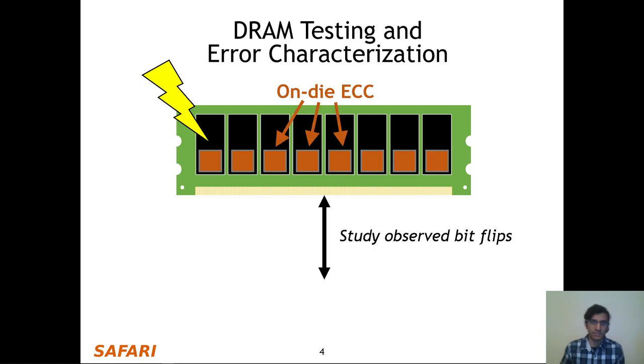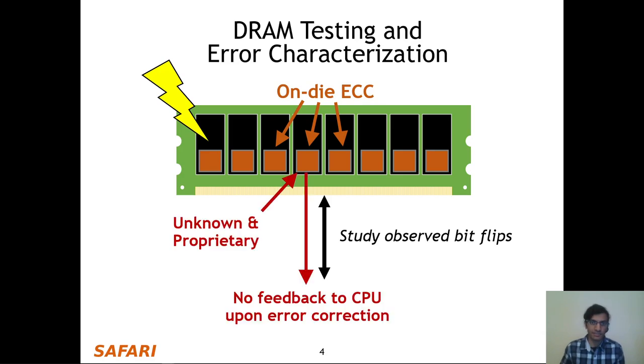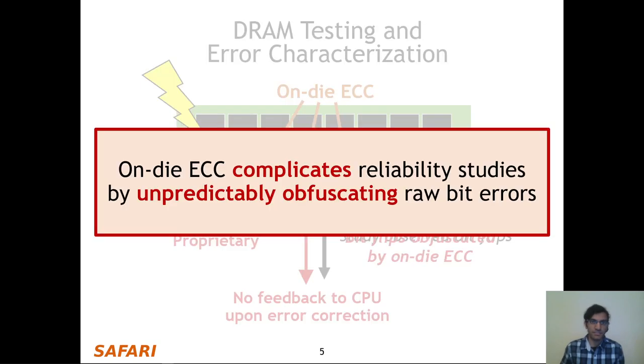However, modern DRAM chips include on-die error correcting codes, or ECC, which are unknown and proprietary and provide no feedback to the CPU upon error correction. Therefore, on-die ECC obfuscates the errors they are trying to study, and this means that on-die ECC complicates reliability studies by unpredictably obfuscating raw bit errors.